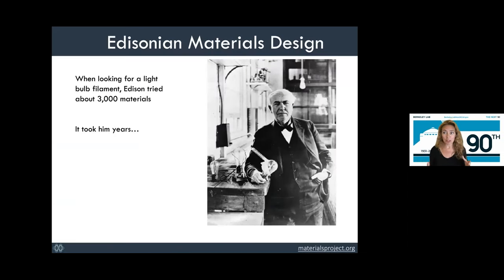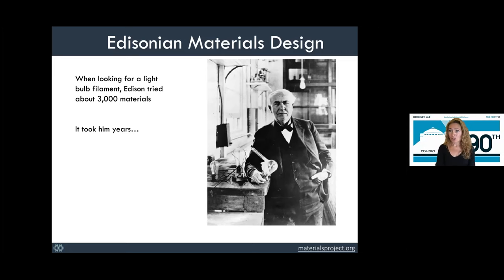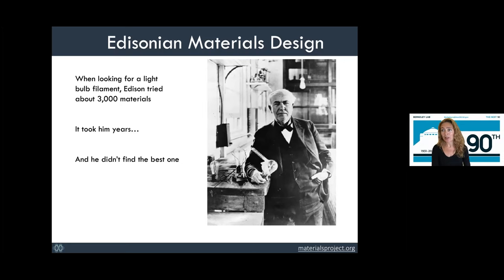We need new and better materials to meet the challenges we're facing today. How are materials developed? We traditionally develop them by so-called Edisonian design — named after Edison, who when looking for a filament for his light bulb, ordered over 3,000 materials from all over the world and painstakingly tried each one, taking him years. Unfortunately, because he was convinced the material had to be from the carbon family, he didn't find the best one. A decade later, a Hungarian group identified tungsten as better than what Edison had identified. This is a long game — finding good materials for a particular application with certain properties.